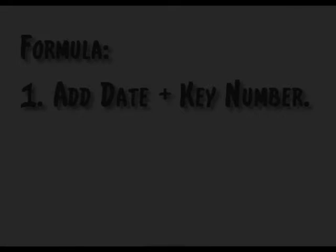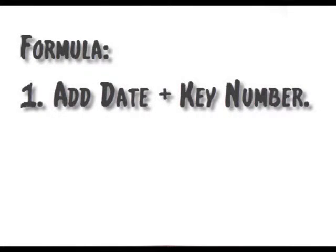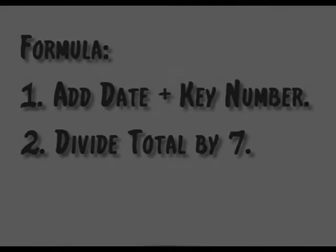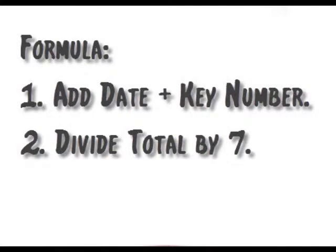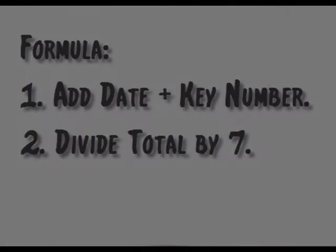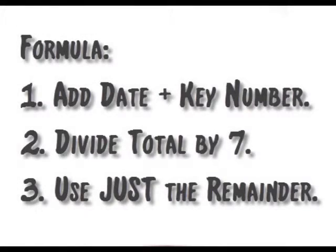The question is, how do we do this system? It's based on the simplest of little formulas. You're going to learn it now and use it each and every month — just swap out the key number. What we do is add the date plus the key number — this month it's 3 — divide that total by 7, and take just the remainder, not the answer.